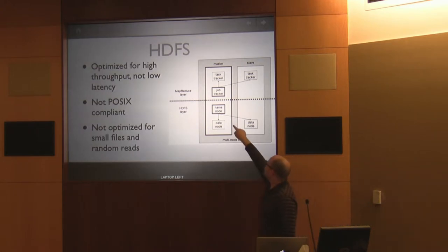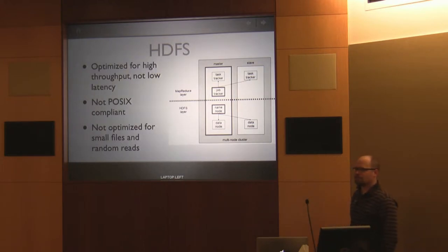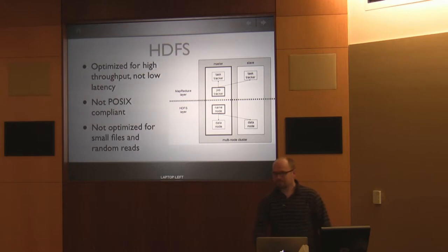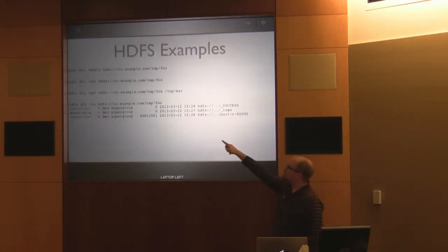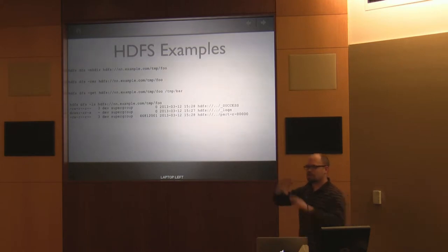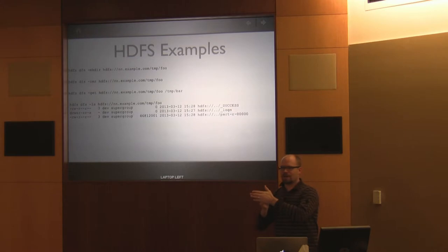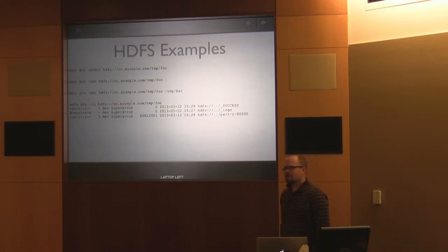When we say 'commodity hardware,' it means different things for slaves versus masters. You probably want a more reliable, beefed-up server for your master. The name node, job tracker, and HBase master node are on pretty hefty hardware, whereas data nodes — if they fail, they fail. Also important: your client needs to be able to talk to every single data node, not just the name node — it physically retrieves chunks from each data node. Things you learn through trial and error or by reading the book.